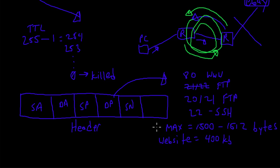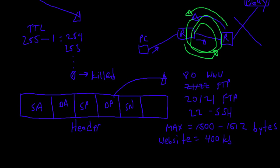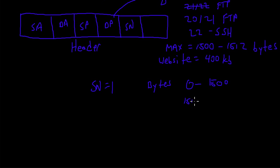You'd rip apart the encyclopedia and stuff pages one through three in the first letter, four through six in the next, and so on. But you need to mark the letters with a sequence number so the router and the computer on the other end know how to order things. The first packet might have sequence number one and contain bytes 0 through 1500, the next 1501 through 3000, and so on until the page is done.